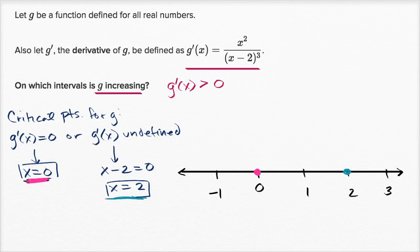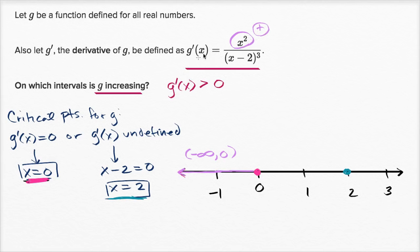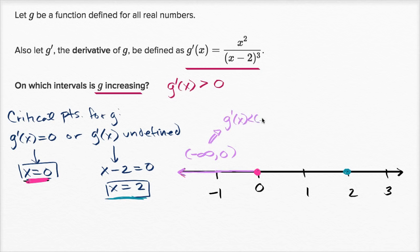Let's think about the interval from negative infinity to zero. Looking at g prime: the numerator x squared is always positive for any nonzero value. For x less than zero, x minus two is negative, and raising a negative number to the third power gives a negative result. So we have a positive divided by a negative — g prime of x is less than zero on this interval, meaning g is decreasing there.